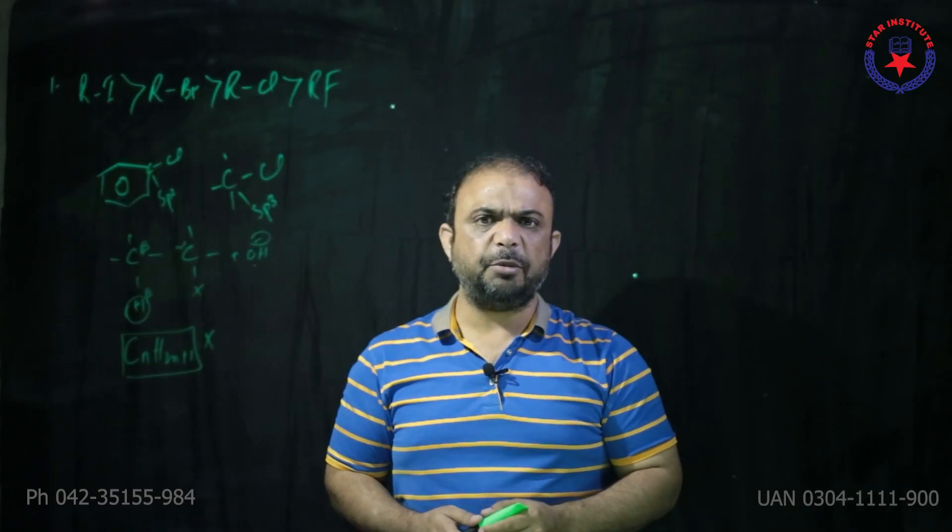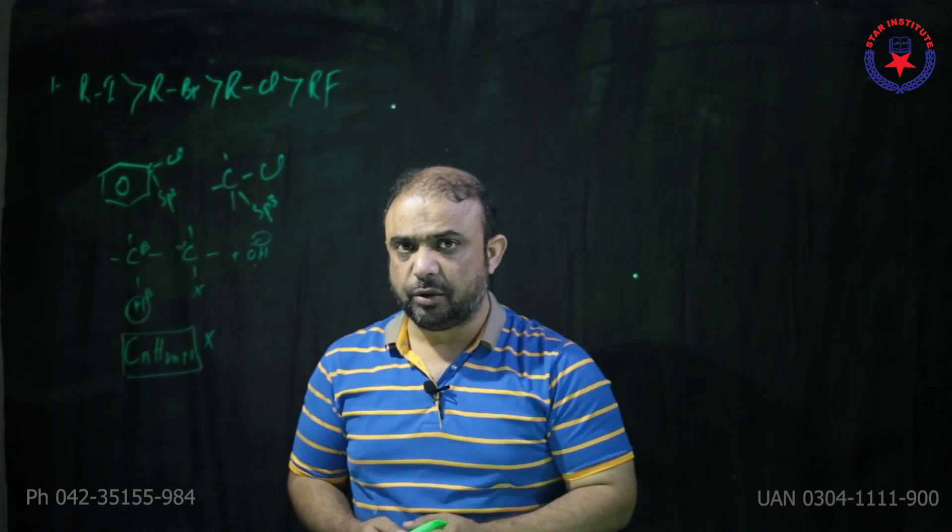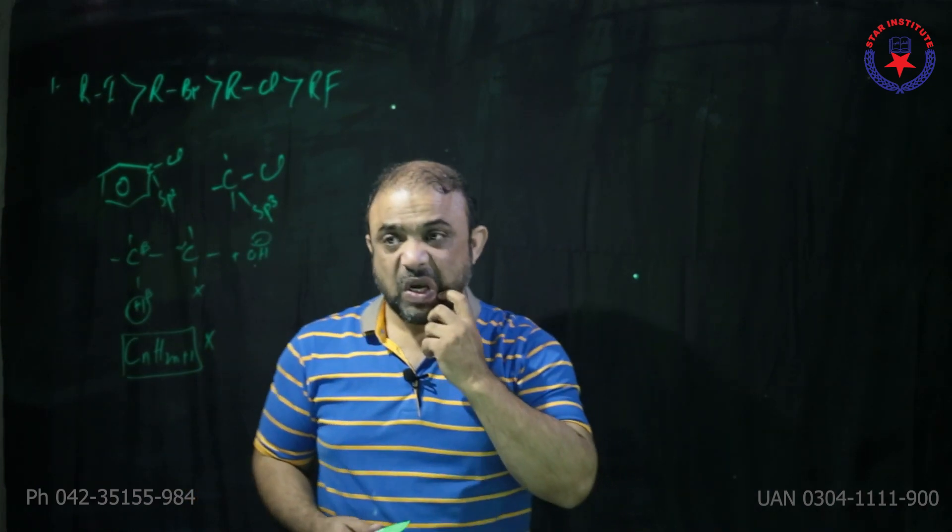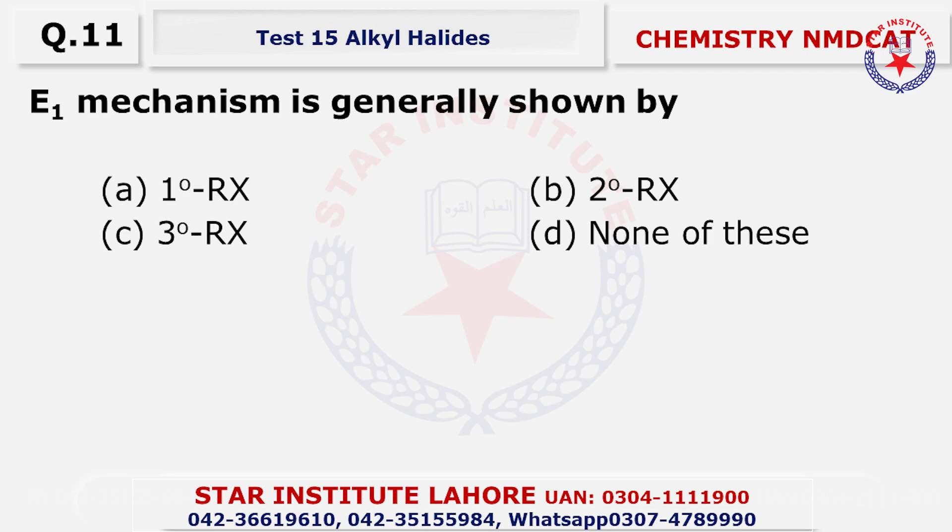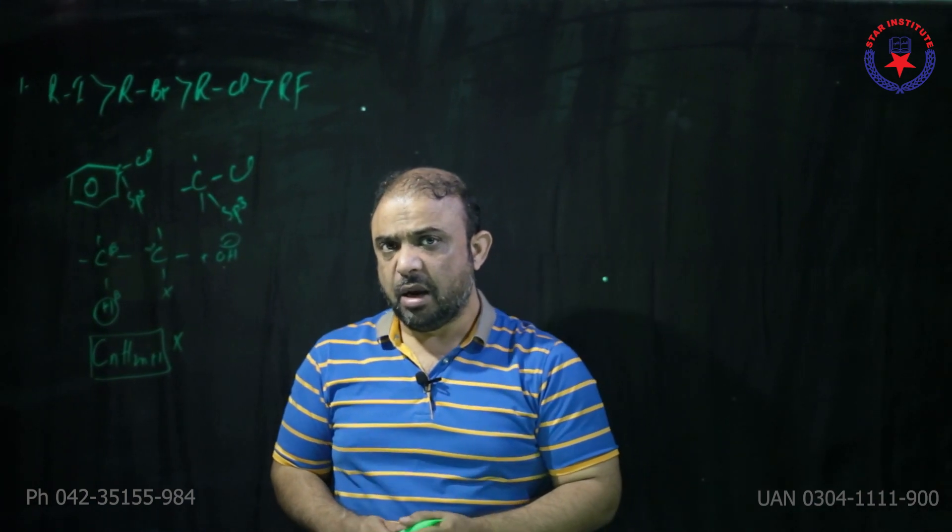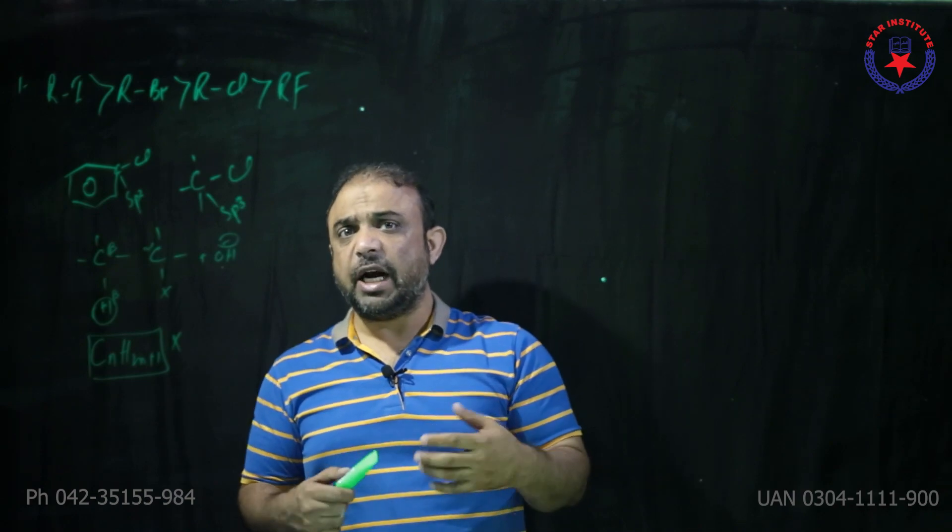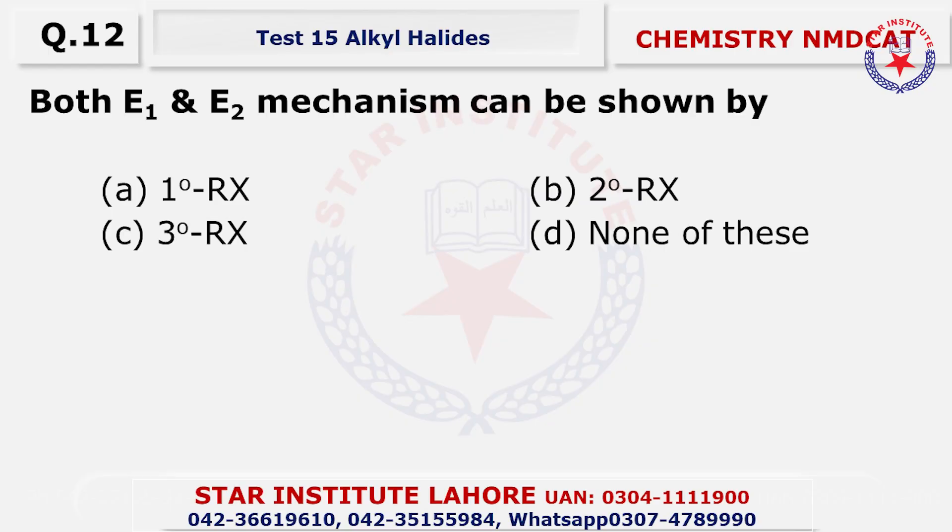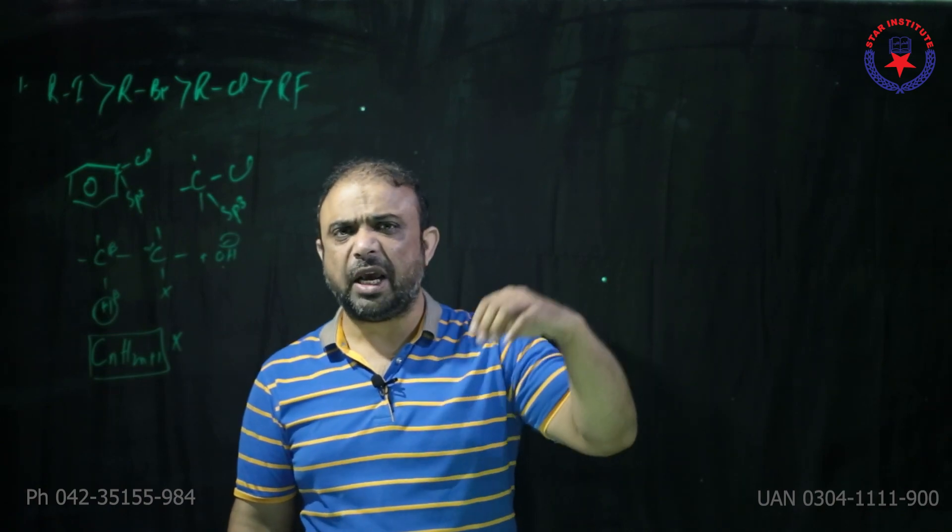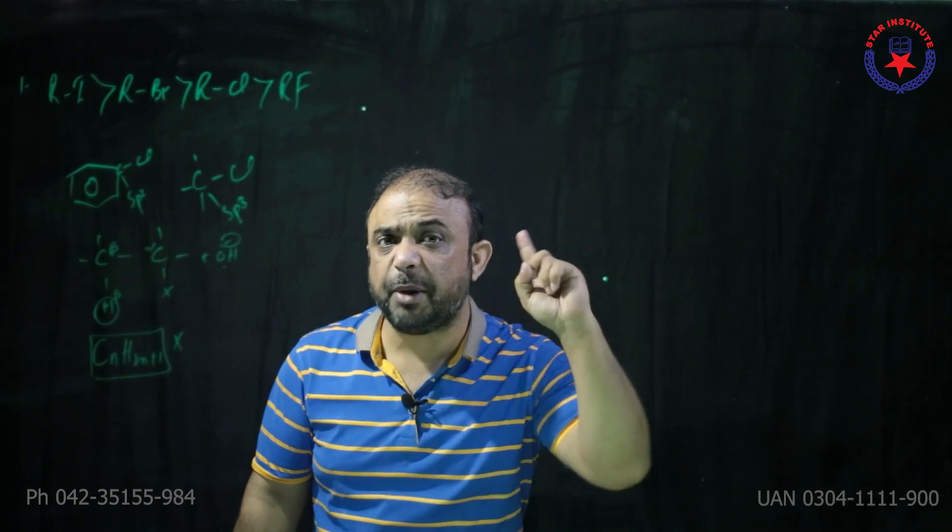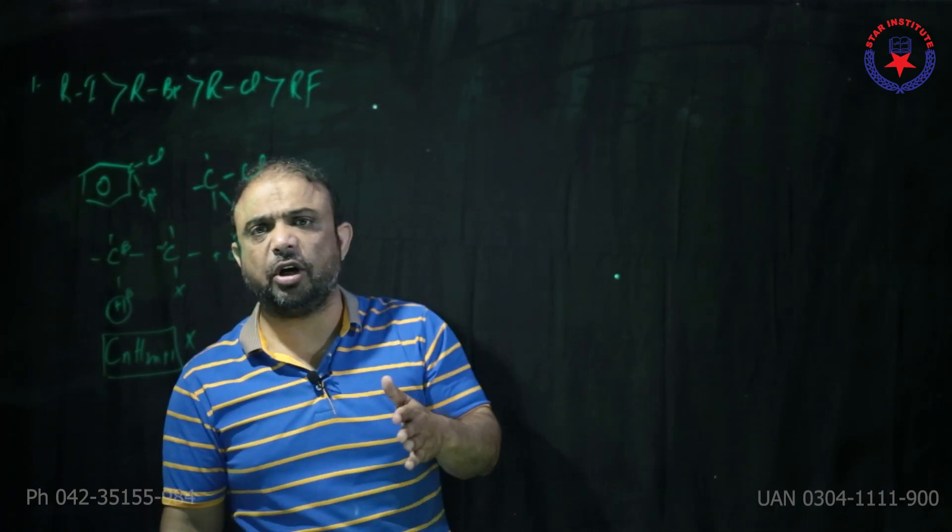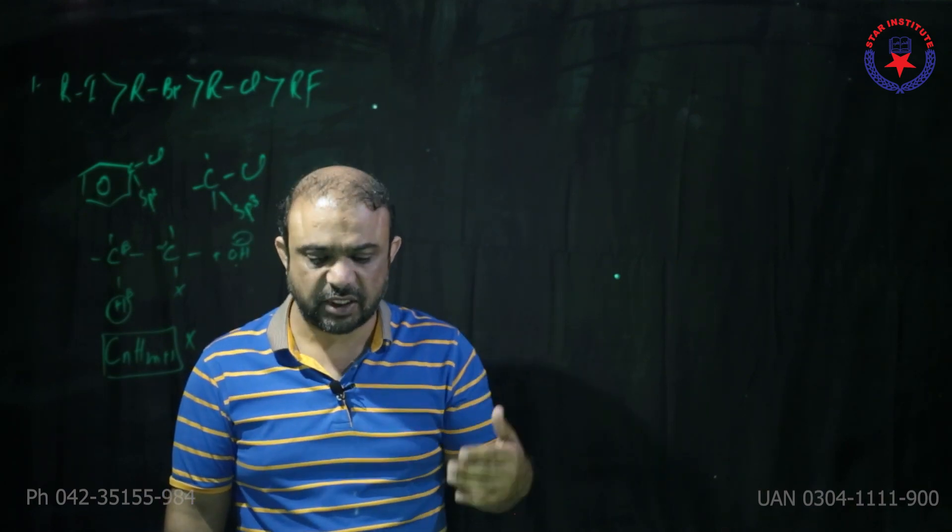Question number ten primary alkyl halides follow, beta agar alkyl halides primary hain toh mechanism should be E2 or SN2 why because there is enough space available for the attack. Question number 11, E1 mechanism is generally shown by tertiary alkyl halide why because during E1 mechanism carbocation should be formed and a tertiary carbonium ion is more stable. Question number 12 both E1 and E2 reactions are shown by secondary alkyl halides. Yaad rakhiye secondary alkyl halide capable hai E1, E2, SN1, SN2 sab ke liye, lekin yeh depend karta hai nature of solvent pe. Agar polar solvent dein ge toh secondary alkyl halide E1 ya SN1 mechanism ki taraf jayein ge aur agar non-polar solvent dein ge toh beta yeh SN2 mechanism ya E2 ki taraf jayein ge.